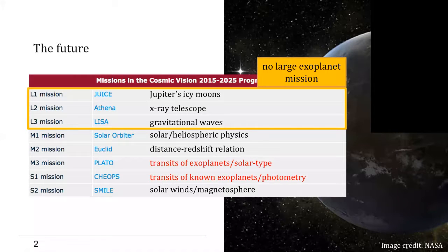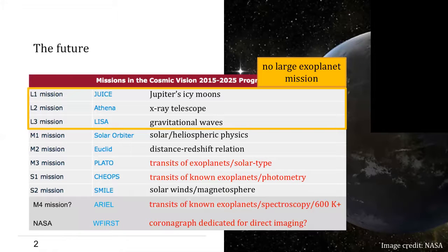Secondly, the medium mission PLATO will focus on transits around solar-type stars only, and the small mission CHEOPS will aim for photometry of planets which are already known. On top of that, there might be another medium-class mission called ARIEL, we heard about it on Monday, and maybe W first with a coronagraph on the American side.